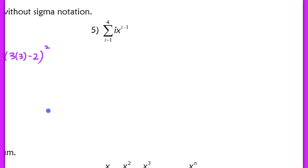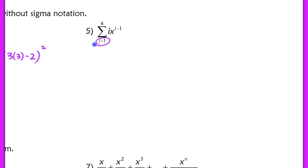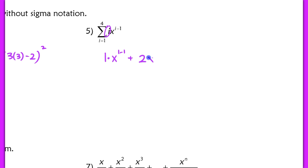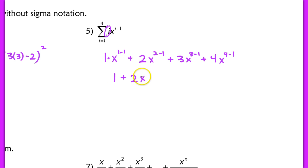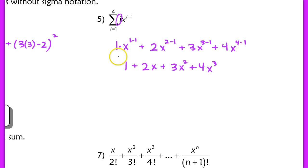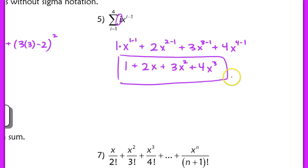In problem 5, the i does not mean the imaginary number — it's just another index notation, the same as k or j. Evaluating from i equals 1 to 4, with the term i times x to the i minus 1, we get: 1 times x to the 0, plus 2 times x to the 1st, plus 3 times x squared, plus 4 times x cubed. We leave this written as a sum because these are not like terms. That's the answer for number 5.